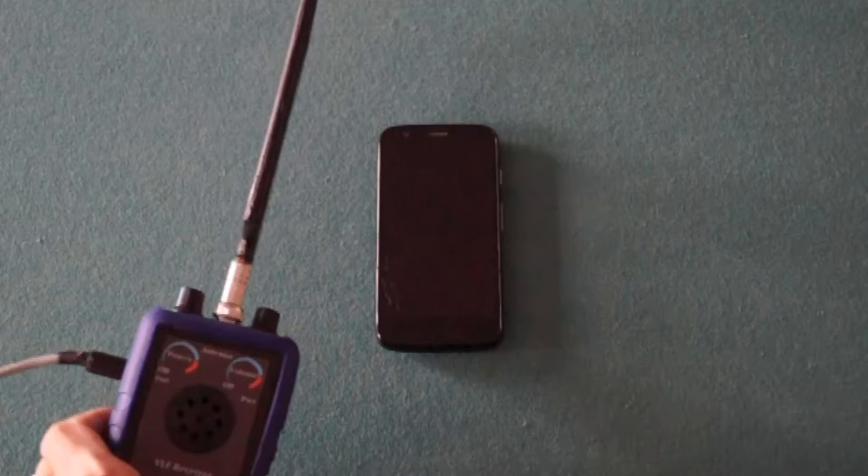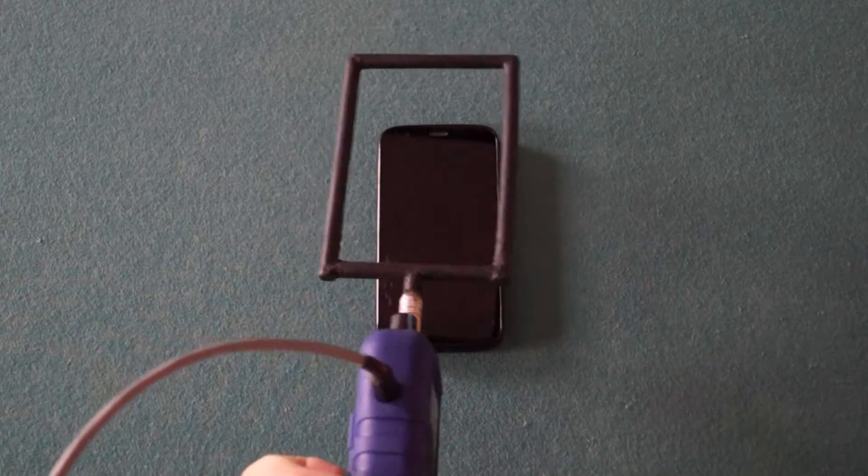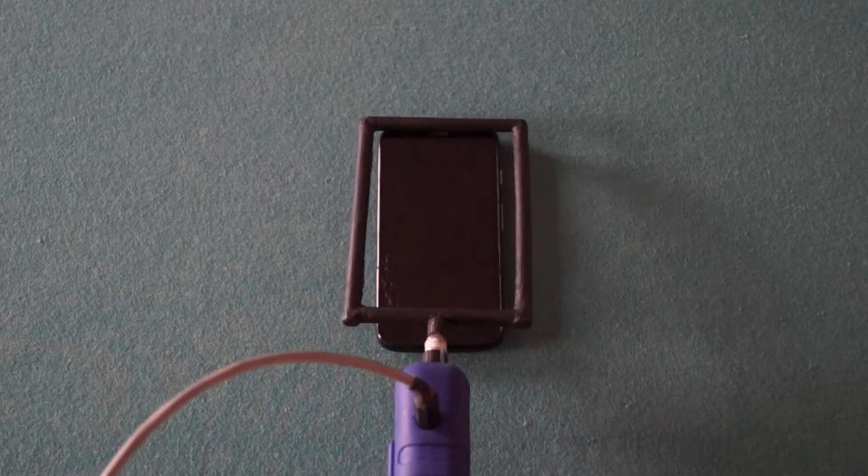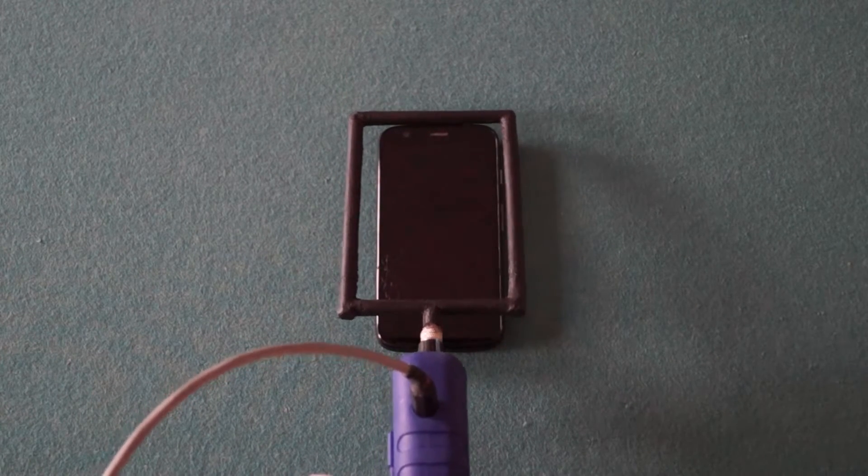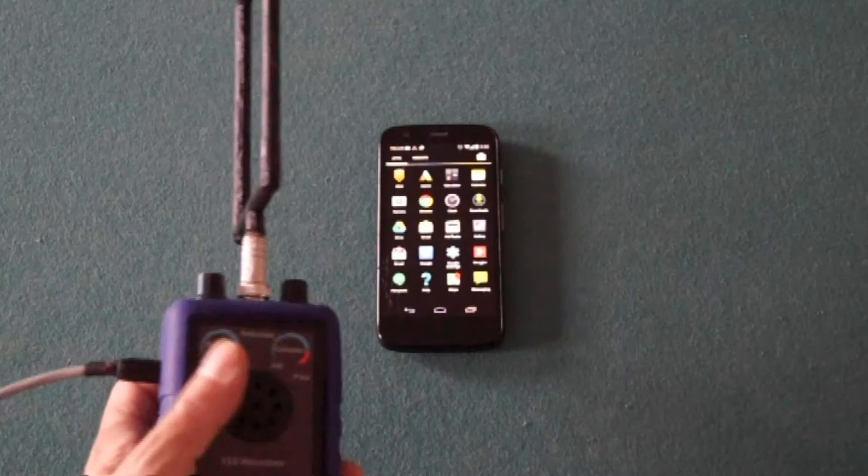Cell phones are communicating with the network and updating applications as they sit on the table. Activating the menu creates a whole new level of emission.